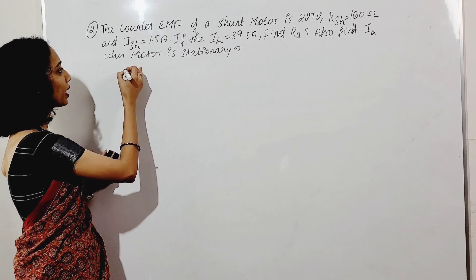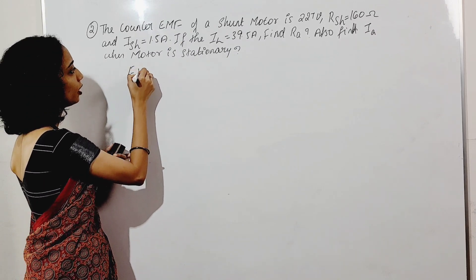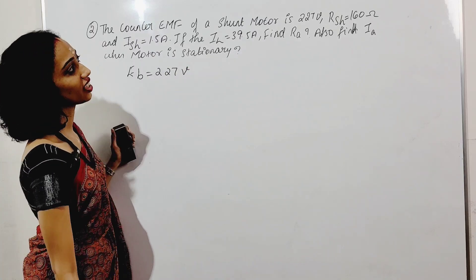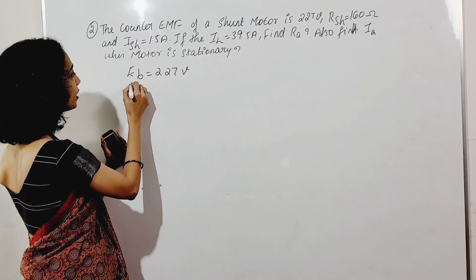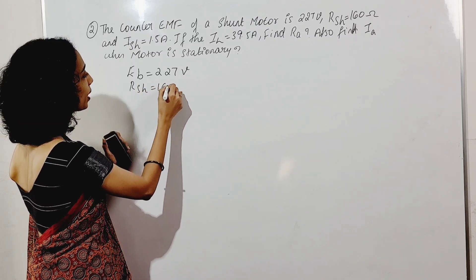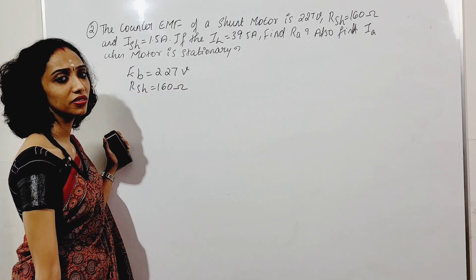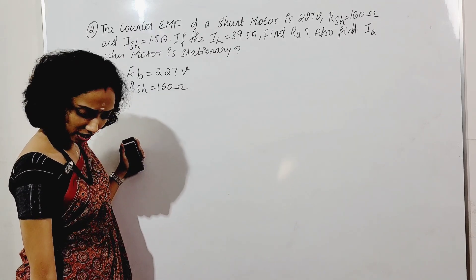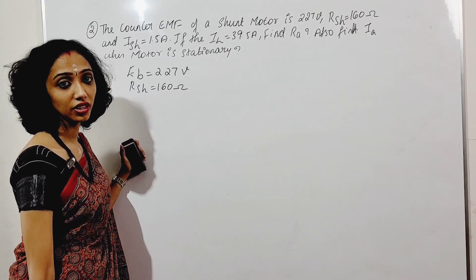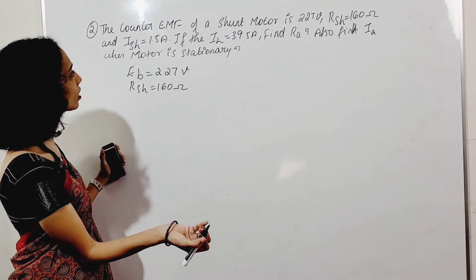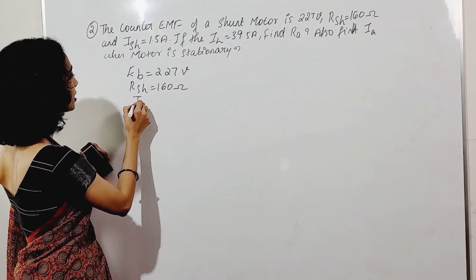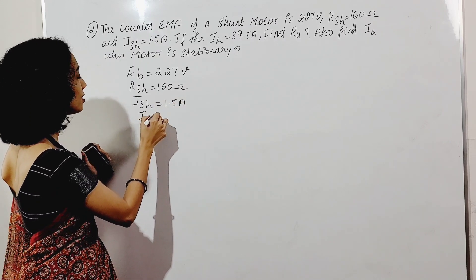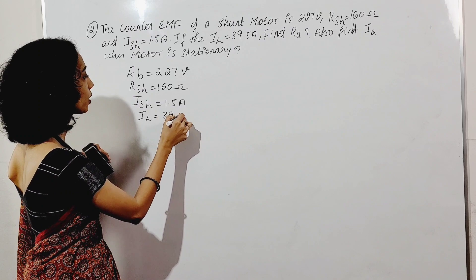Now, back EMF EB equals 227 volts. How is the RSH given data? The supply voltage is 161 volts — back EMF there is a figure. Part B: EB is 160 volts. ISH is equal to 1.5 ampere and IL is equal to 39.5 ampere.